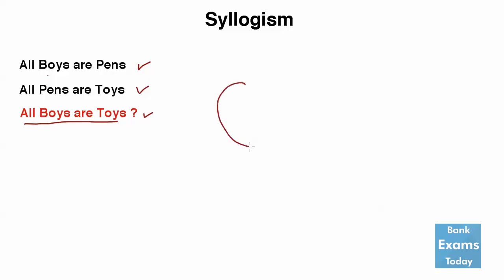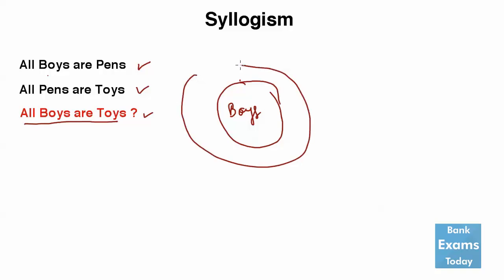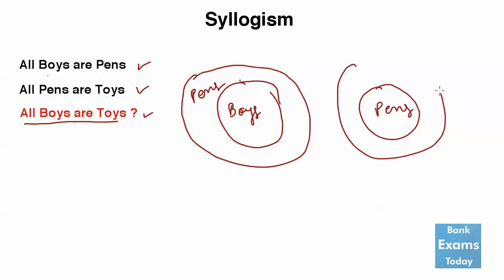First of all, let's draw the circles. All the boys are pens — so all the boys are part of the bigger circle, that is pens. And all the pens are part of the bigger circle, that is toys.